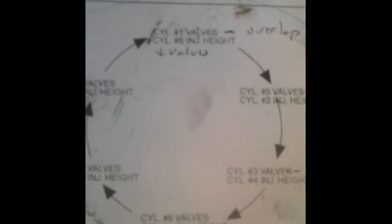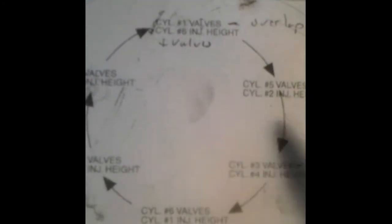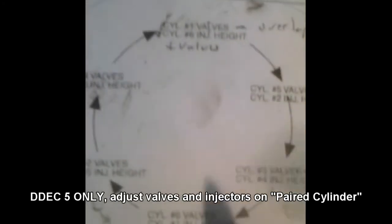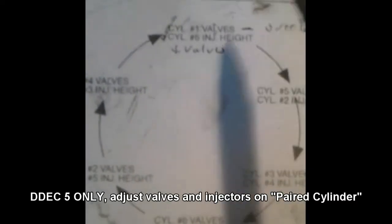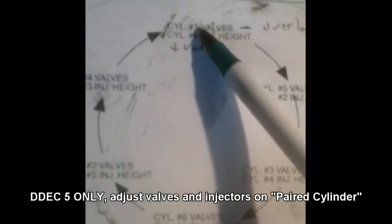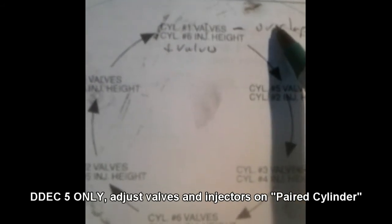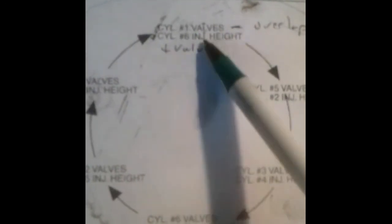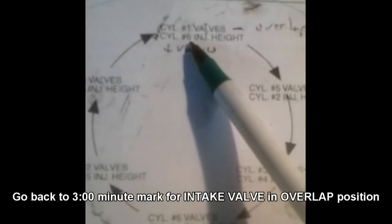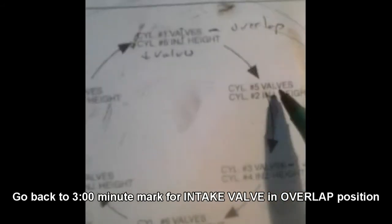Okay, so we're talking about doing a valve adjustment, valve lash adjustment, whatever you want to call it. This is how this works. When you set the cylinder number one valve overlap, as we just discussed, then you would do the injector height. And on a DDEC 5, you would also do the injector height and the valves on cylinder number six.